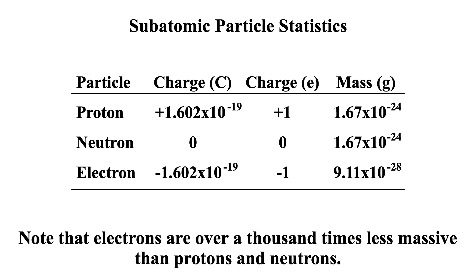Protons, neutrons, and electrons compose atoms. Protons and neutrons are in the nucleus; electrons are outside the nucleus. Protons and electrons have the same magnitude of charge but opposite signs — protons are positively charged, electrons are negatively charged, and neutrons are neutral. The mass of a proton and neutron are about the same and roughly a thousand times more massive than electrons. We use a mass number, which is the sum of protons and neutrons, neglecting electrons because they are a thousand times less massive.